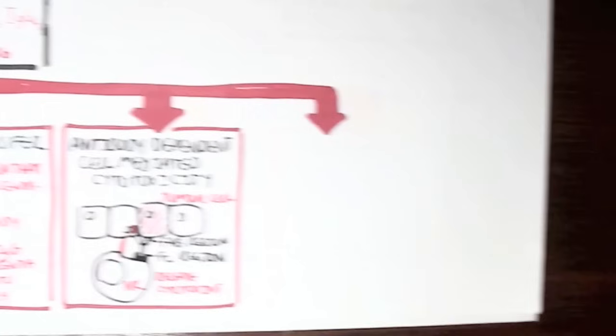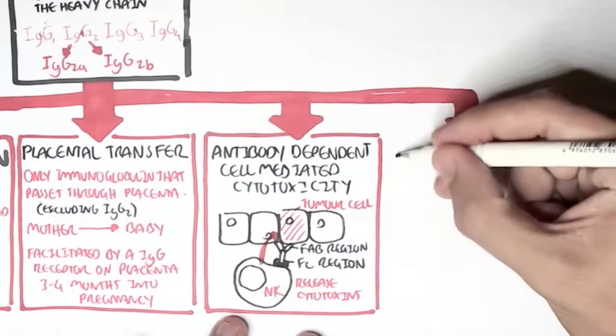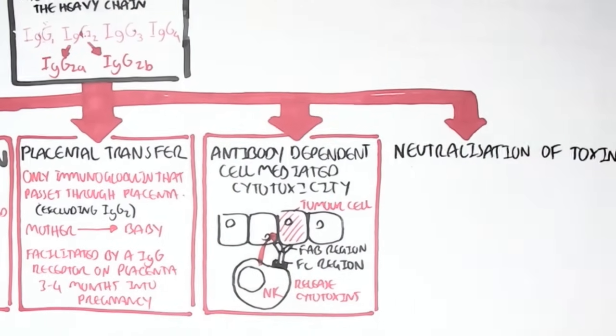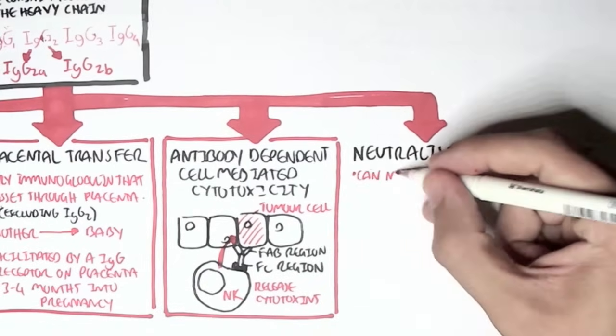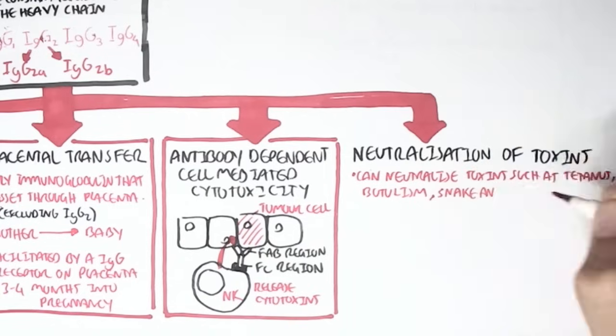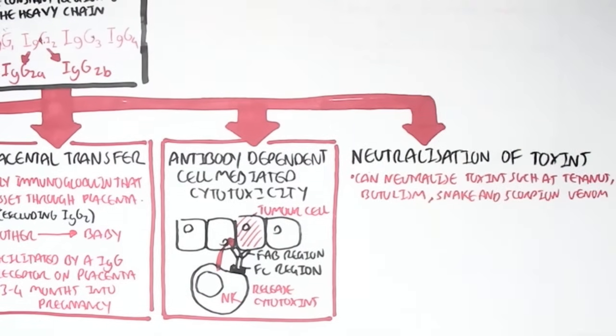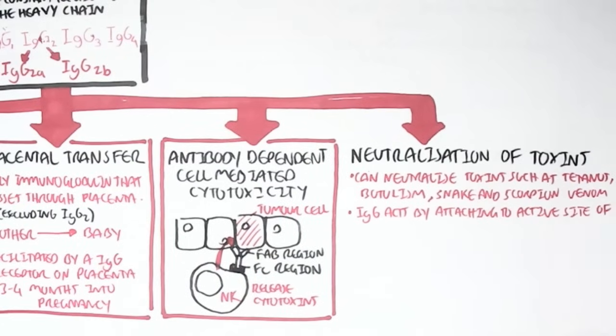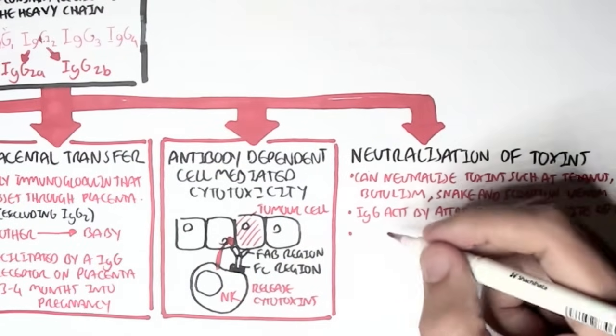IgG also functions to neutralize toxins. And it can neutralize toxins such as tetanus, botulism, and snake and scorpion venom. IgG acts by attaching to active sites of the toxins, basically inactivating it.